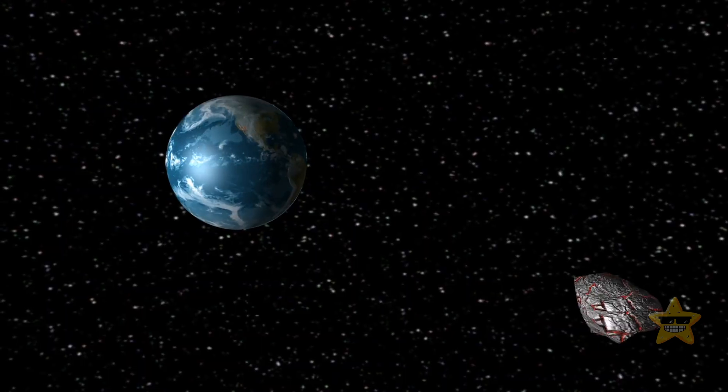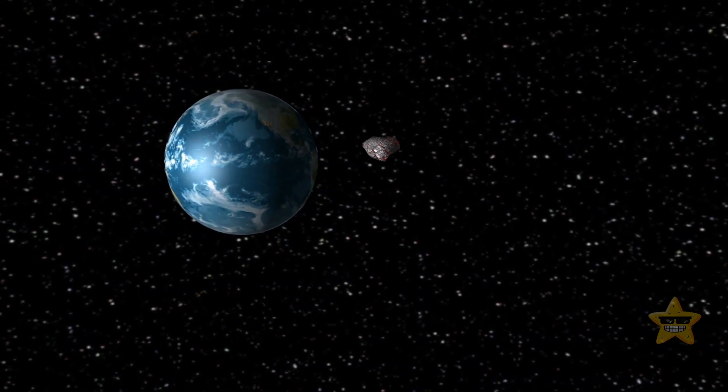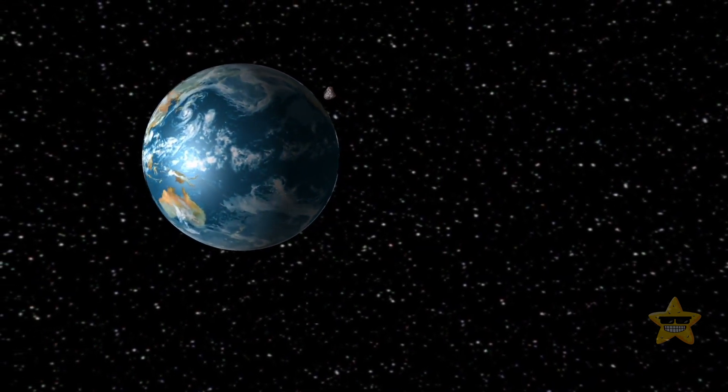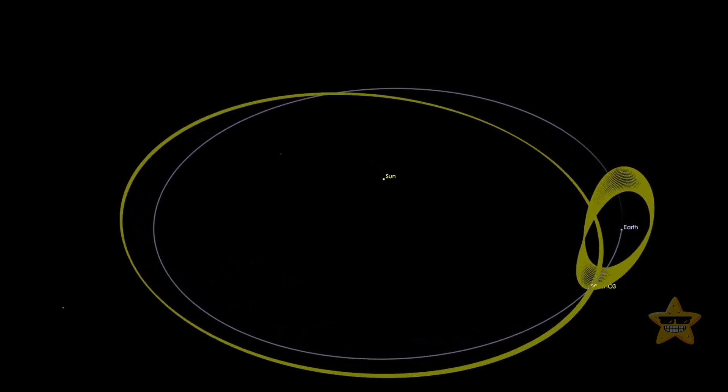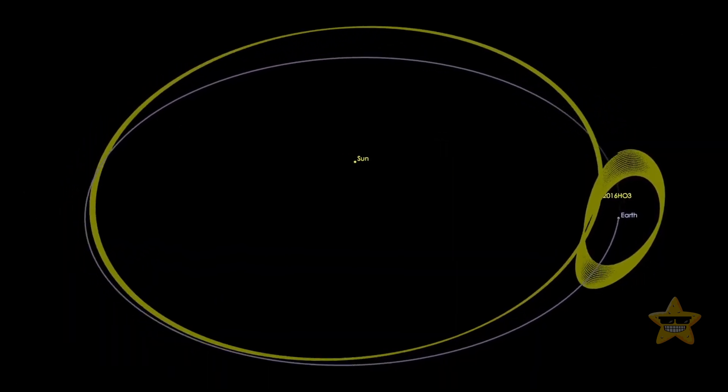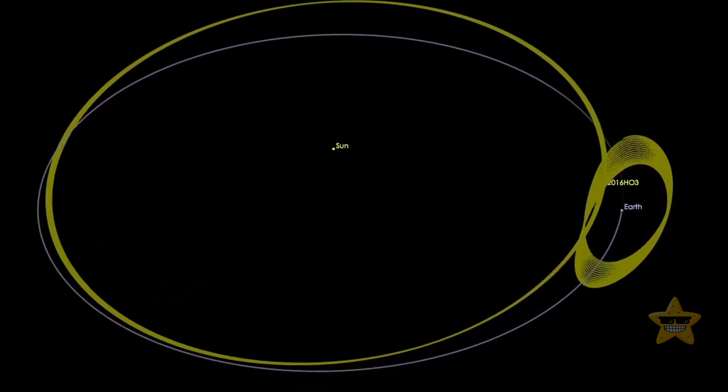While it's still being studied, current data suggests that 2023 FW13 entered its current orbit at least 2,100 years ago. According to simulations based on preliminary orbital calculations, the quasi moon will accompany Earth for another 1,700 years or so.